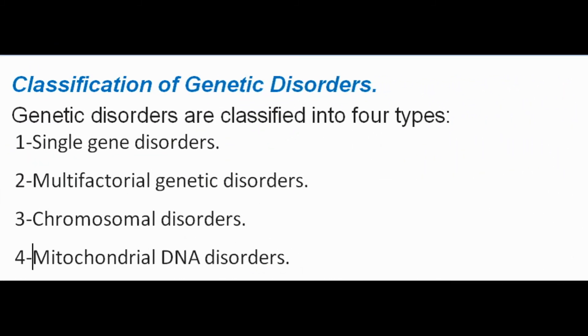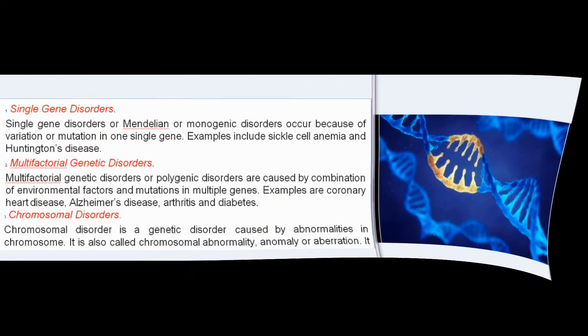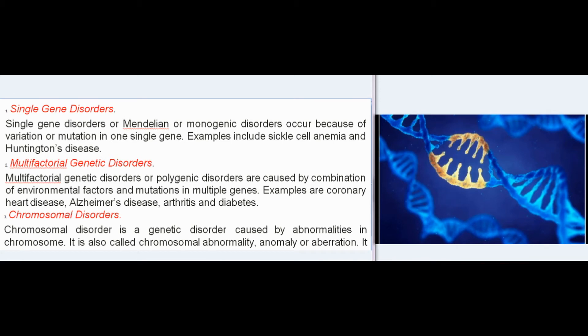Genetic disorders are classified into four types: (1) single gene disorders (also called Mendelian or monogenic disorders), which occur due to variation or mutation in one single gene — examples include sickle cell anemia and Huntington's disease; (2) multifactorial genetic disorders; (3) chromosomal disorders; and (4) mitochondrial DNA disorders.